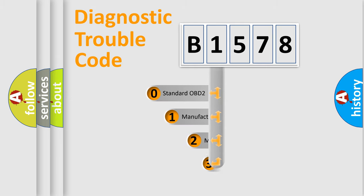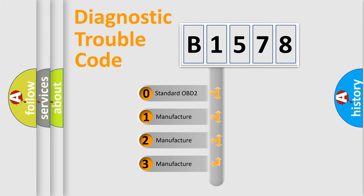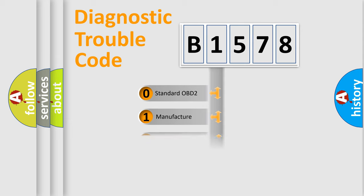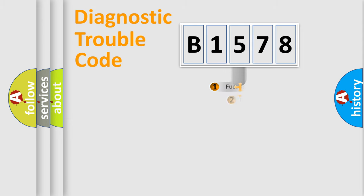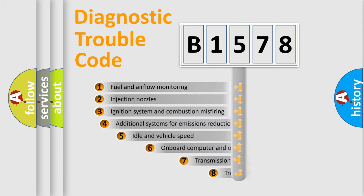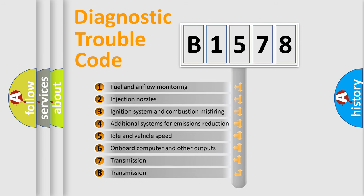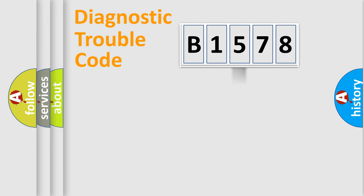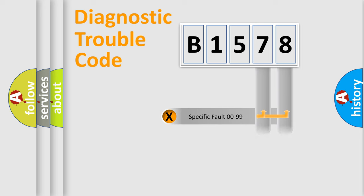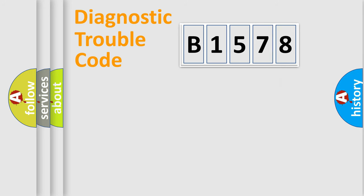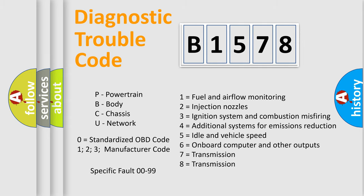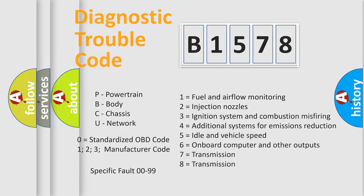This distribution is defined in the first character of the code. If the second character is expressed as zero, it is a standardized error. In the case of numbers 1, 2, or 3, it is a more manufacturer-specific expression. The third character specifies a subset of errors. The last two characters define the specific fault of the group. This division is valid only when the second character is expressed by the number zero.